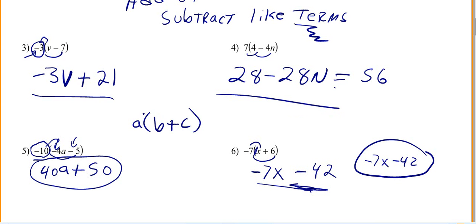Like if you have something like this, you can go a times b gives you ab. Then you go a times c gives you ac. So that's it. That's the distributive property. If you have questions about it, just ask me in class.